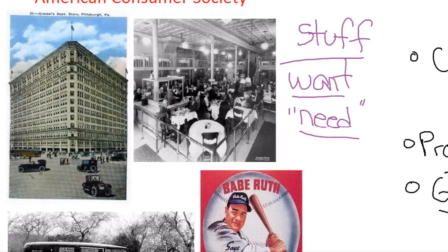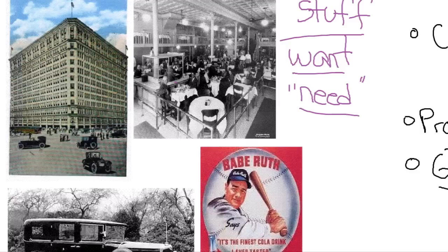Americans by the 1920s are working far fewer hours than in previous decades. They have more disposable income and their attitudes about work begin to change. Work ceases to be an end in itself — the way people fulfilled themselves during the 19th century. By the 20th century, work is simply there to provide money that you can then use to buy stuff that you want. This is a very important social and cultural change that has an impact on American purchasing and spending habits, especially in the 1920s, as American society becomes much more reoriented around buying stuff.